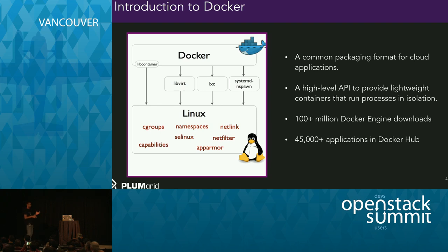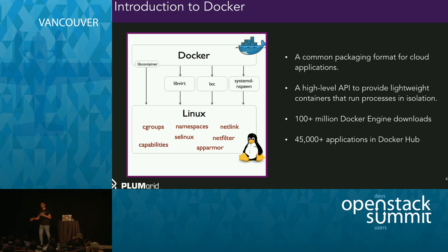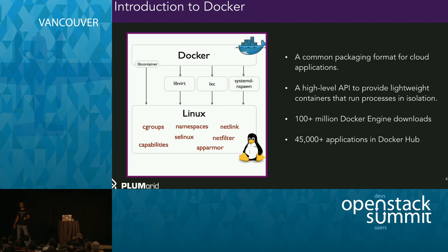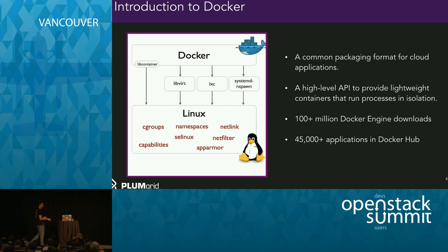Docker offers a common packaging format or a standard API to provision containers in a way that you can run processes in isolation. As a result, it's no surprise there's huge adoption, just like OpenStack. If you look at these numbers, they're stunning: 100 million-plus Docker engine downloads, 45,000-plus applications on Docker Hub, hundreds of community members, excellent stats on GitHub. This shows how the industry has already embraced container technology, and specifically Docker.